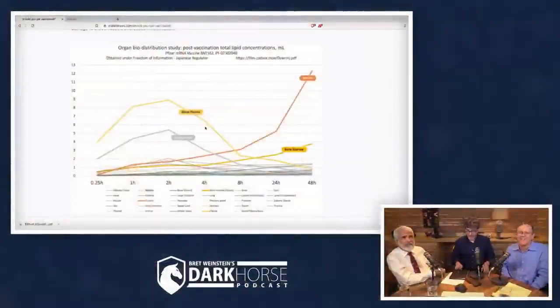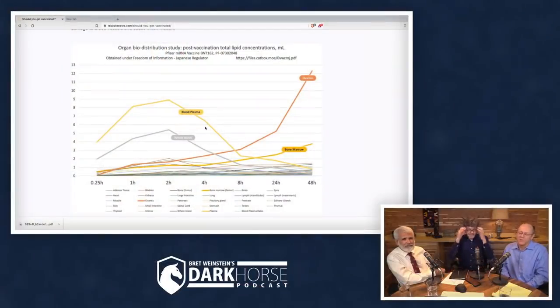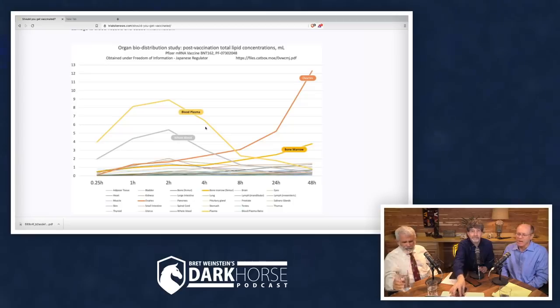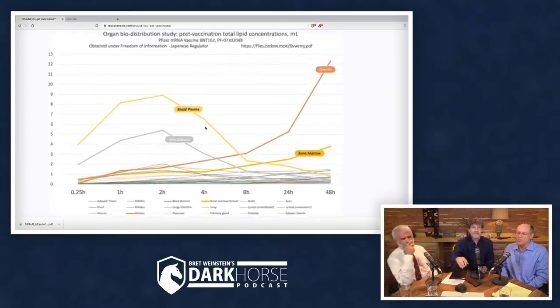This isn't theoretical — it's real. We already have the data. Byram Bridle did a freedom of information request of the Japanese government for the Pfizer data and he got a biodistribution chart. I'm pretty sure I linked to the original data in my paper.